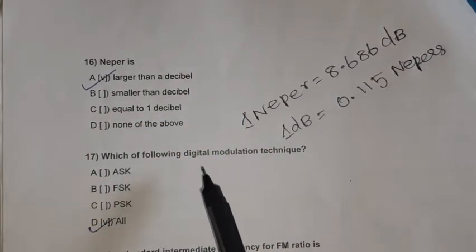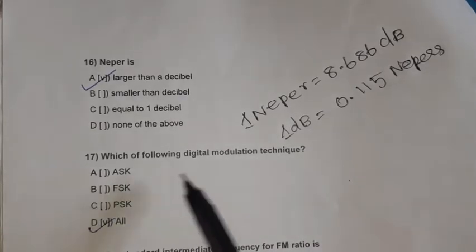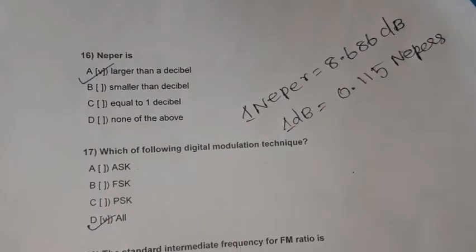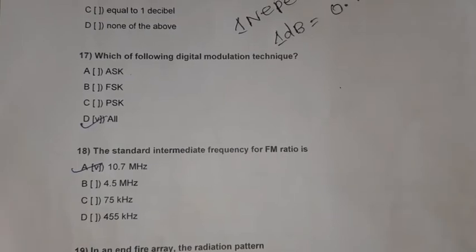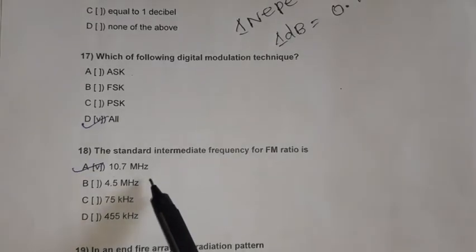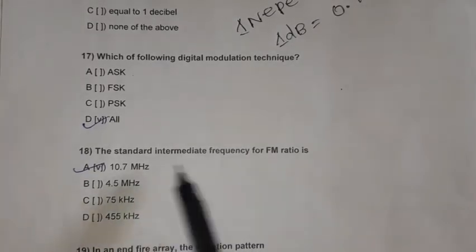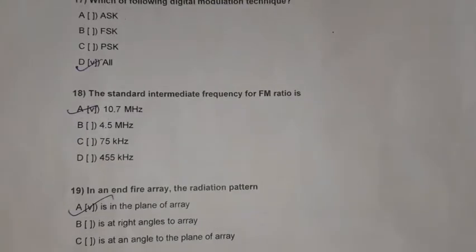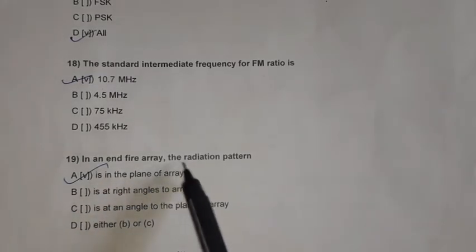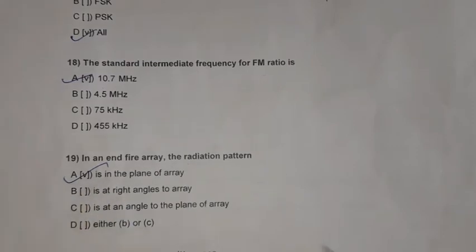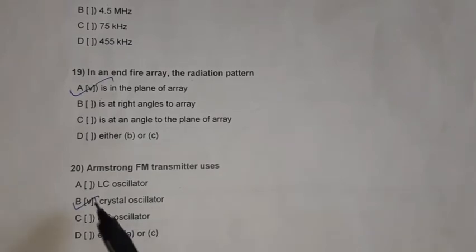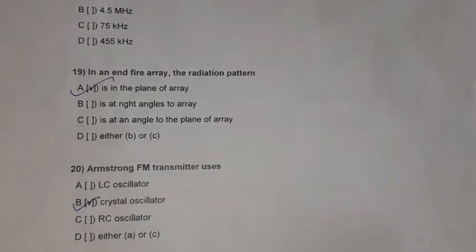Question 17: ASK, FSK, and PSK are all digital modulation techniques — Option D, all. Question 18: The standard intermediate frequency for FM is 10.7 megahertz. Question 19: In a Neper array, the radiation pattern is in the plane of the array. Question 20: The Armstrong FM transmitter uses a crystal oscillator.